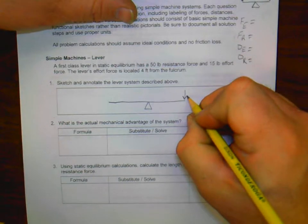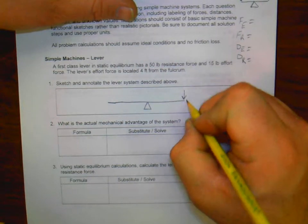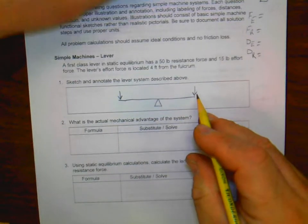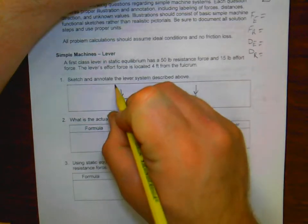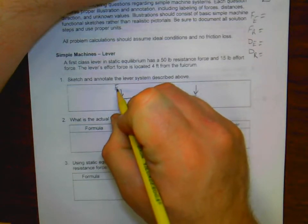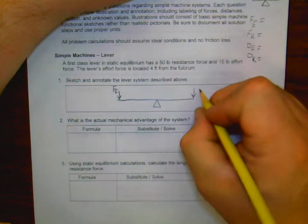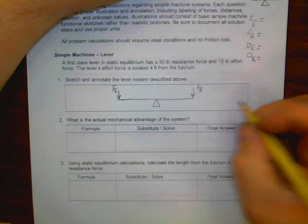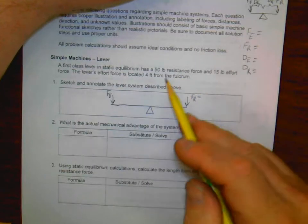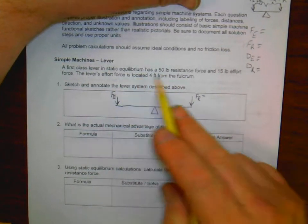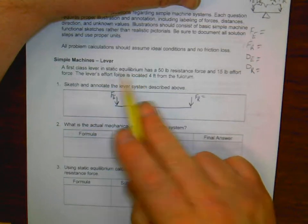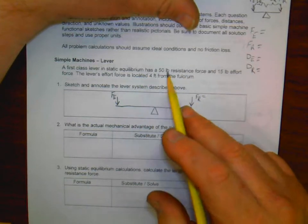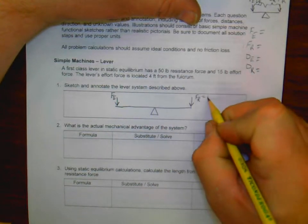So forces are indicated by a vector arrow right there. And we've got force of E, which is my effort force over here, and force of R, which is my resistance force right here. And as we read, we see it's in static equilibrium. Now that means it is balanced. So in static equilibrium, it has a 50-pound resistance force, so I'm going to label this here, 50 pounds.